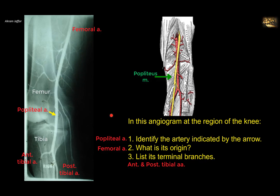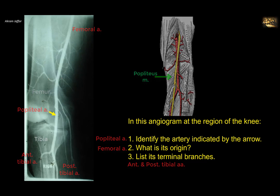Note the close proximity of the popliteal artery to the popliteal surface of the femur. That's why in supracondylar fractures of the femur, the sharp end of the distal fragment — which is pulled posteriorly by the two heads of gastrocnemius — can injure the artery.